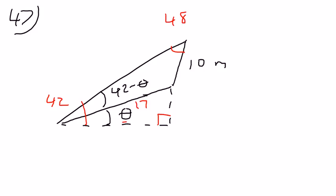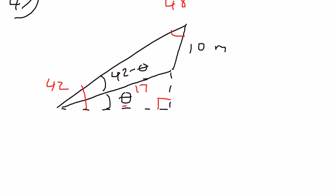So then I know I have sine of 48 over 17 should equal the sine, and I'm just going to say x equals 42 minus theta. And that would be this angle here.